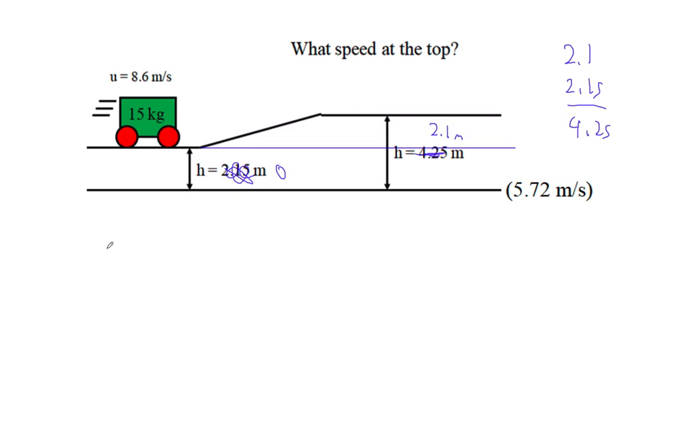And then I can just simply do this: 1.5 mv squared. So I'll say it has 0 potential, right?